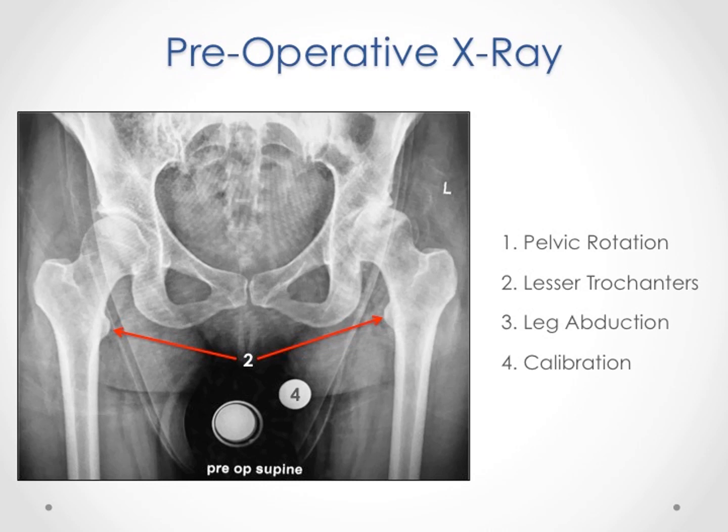First, in order to achieve a level pelvis, the operating room table is tilted left or right until the pubic symphysis winds up exactly with the spine as seen here. And then we can see symmetry of the obturator foramen as well as the teardrops. So now we have a neutral pelvis.